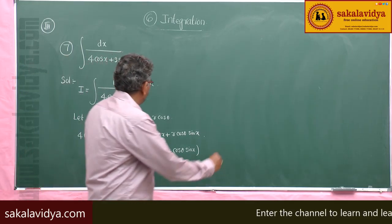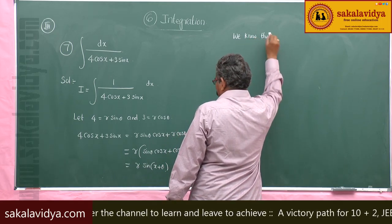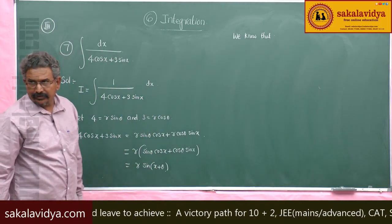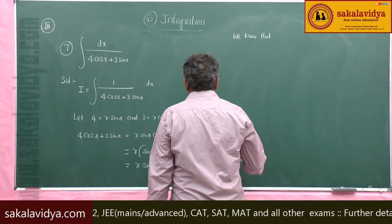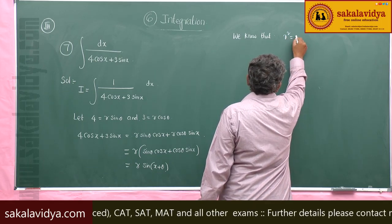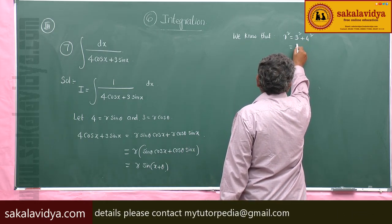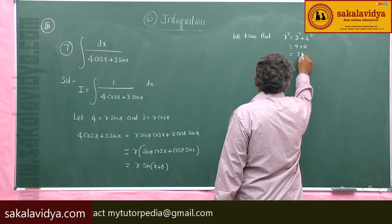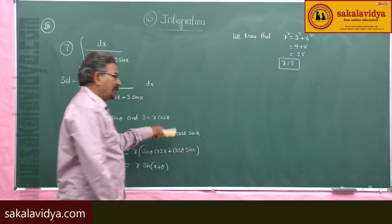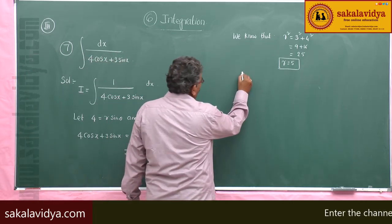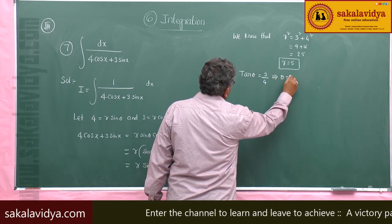Eliminating theta from the two parametric equations, we get r squared equals 3 squared plus 4 squared, which is 9 plus 16 equals 25, so r equals 5. Dividing r sin theta by r cos theta gives tan theta, so tan theta equals 3 by 4, meaning theta equals tan inverse of 3 by 4.